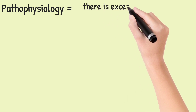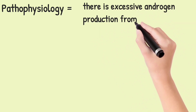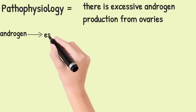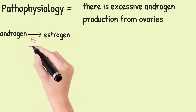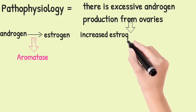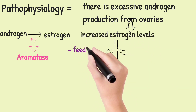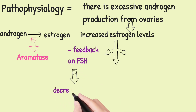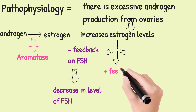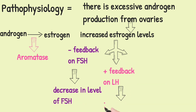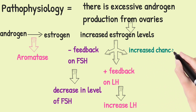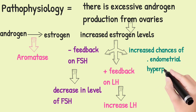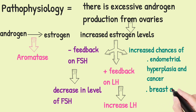Pathophysiology of PCOS: there is excessive androgen production from the ovaries. This androgen is then converted to estrogen by a hormone called aromatase. Increased estrogen level will cause three things: it causes negative feedback on FSH, decreasing FSH levels; it causes positive feedback on luteinizing hormone, so LH increases; and it also increases the chances of endometrial hyperplasia, endometrial carcinoma, breast and ovarian carcinoma.